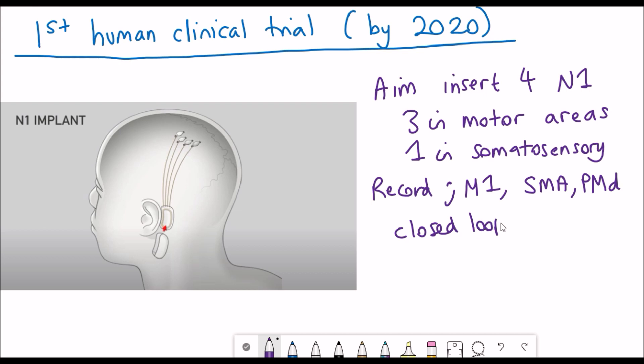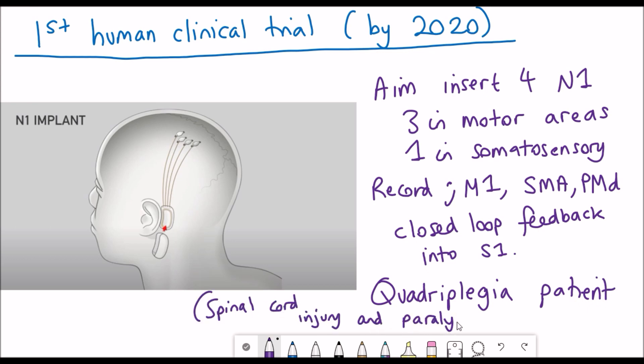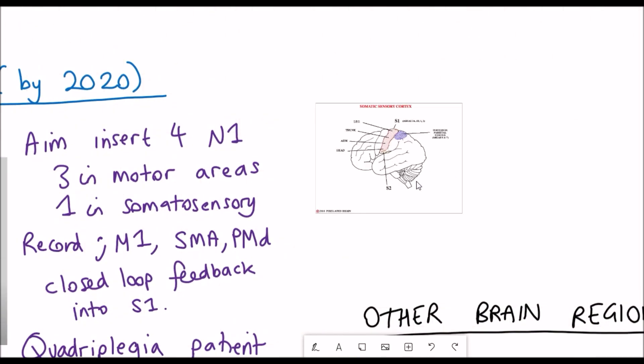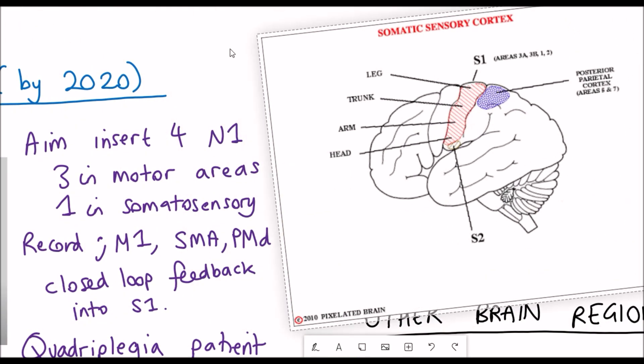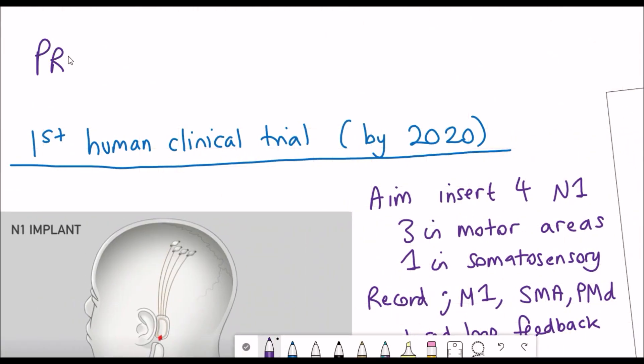The plan is to record neuronal activity in the M1, SMA and PMD areas of the brain and then to be able to feedback and stimulate the S1 region. If you don't really know what those areas mean don't need to worry too much, there's a little map there if you're interested but the priority number one is the safety of patients.